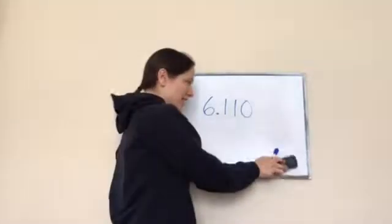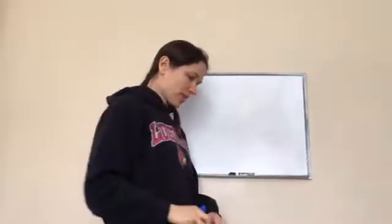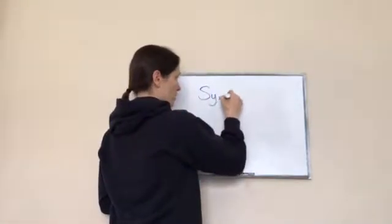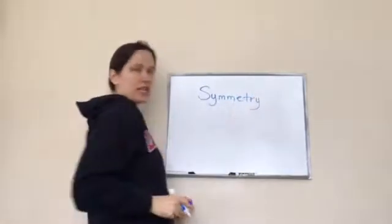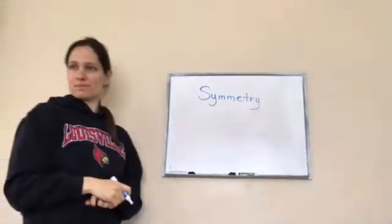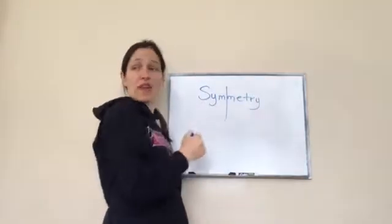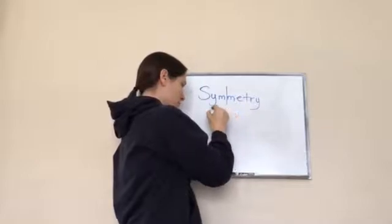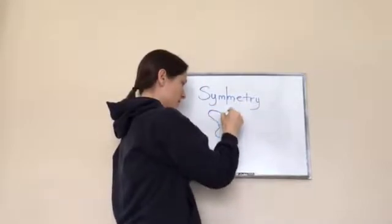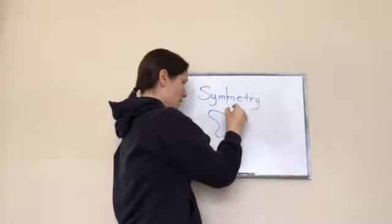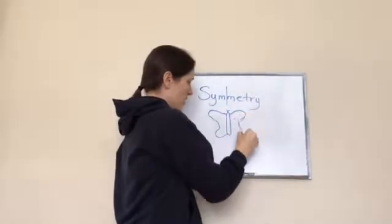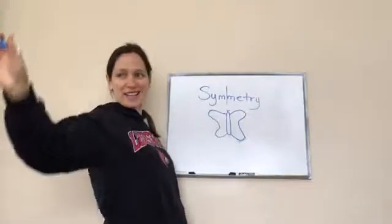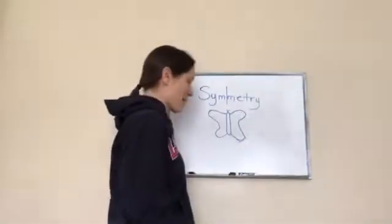Okay, sixth grade lesson 110, and this one is on symmetry. I just want you to look at this word — do you see two letters that look the same? M and M, yes, they kind of reflect each other. Now this is a butterfly — good thing you realize that. That is a beautiful butterfly.